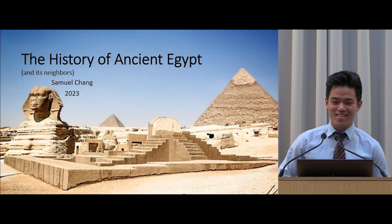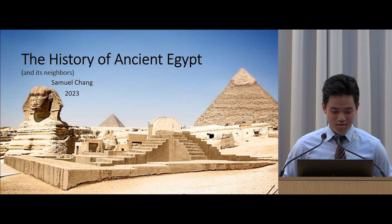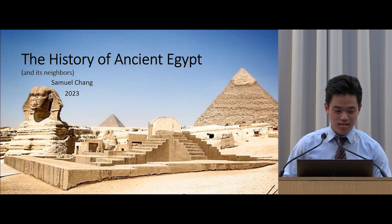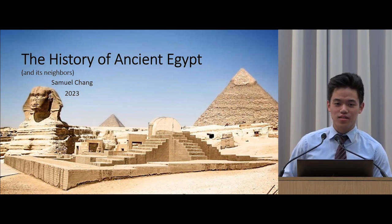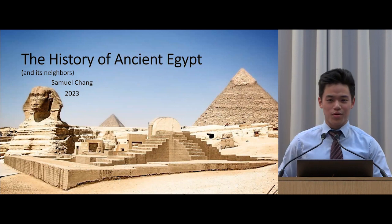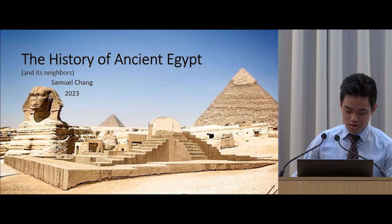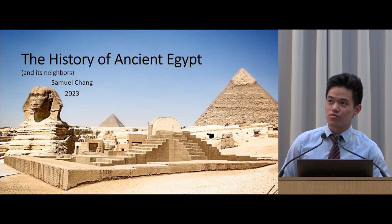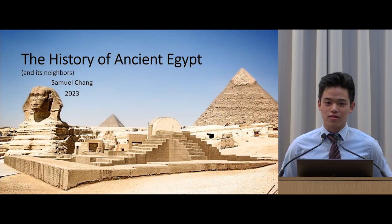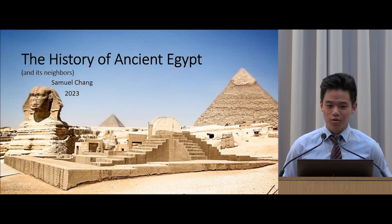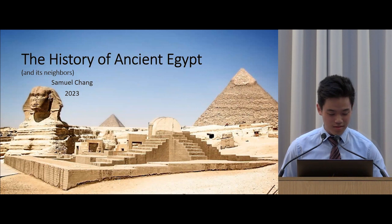Good afternoon. Today I want to present to you a series: the history of ancient Egypt and its neighbors. We are going to cover about 3,000 years, and we will not only learn something about Egyptian history, but also the history of its neighbors, and we will also learn about God's history and how he fulfilled his sovereign council.